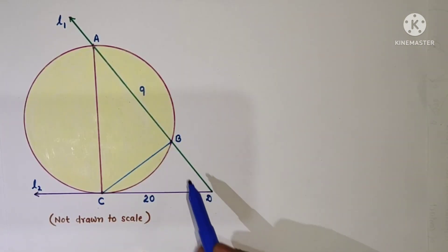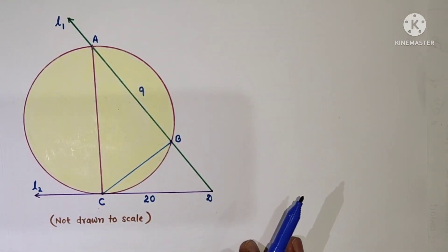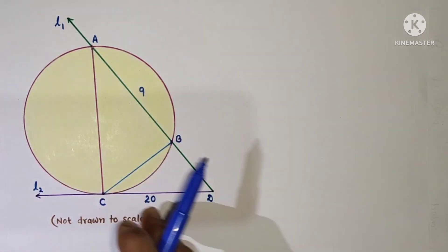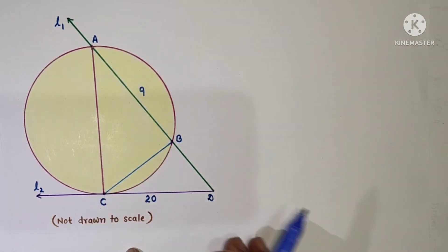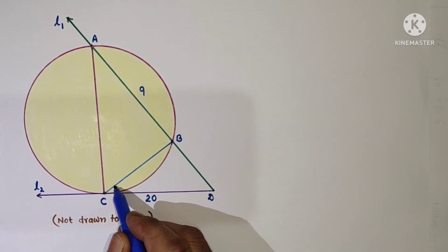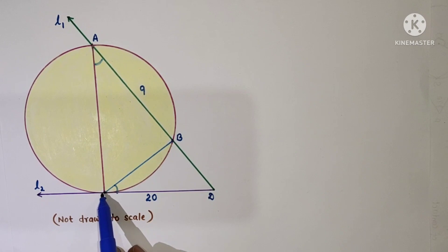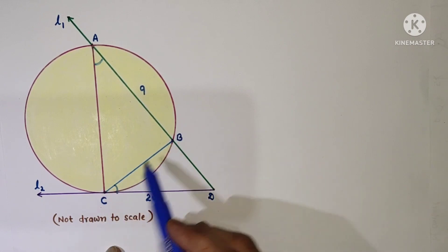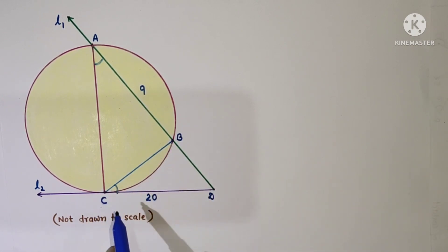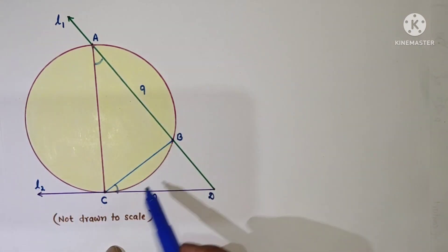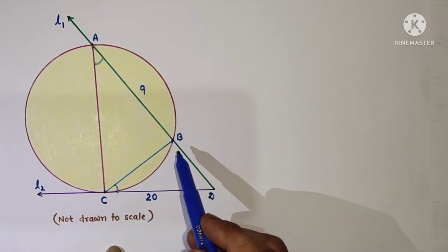To find the value of BC upon AC, we have to prove that triangles DBC and DAC are similar. To prove that, this angle will be equal to this angle by the alternate segment theorem. This is the point of contact where the tangent touches, and BC is the chord. The angle between chord BC and tangent DC at point C equals the angle subtended by chord BC in the alternate segment. Therefore, angle BCD is equal to angle BAC.